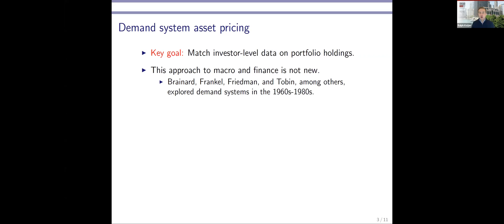What the goal is of demand system asset pricing is to also in addition match data on investor level portfolio holdings. I want to emphasize that this idea of using portfolio holdings is actually not new at all. If you go back to the 60s and 80s, it was actually a very active literature with contributions by Brainerd, Frankel, Friedman, Tobin, among others, that used demand systems to study some of these questions.